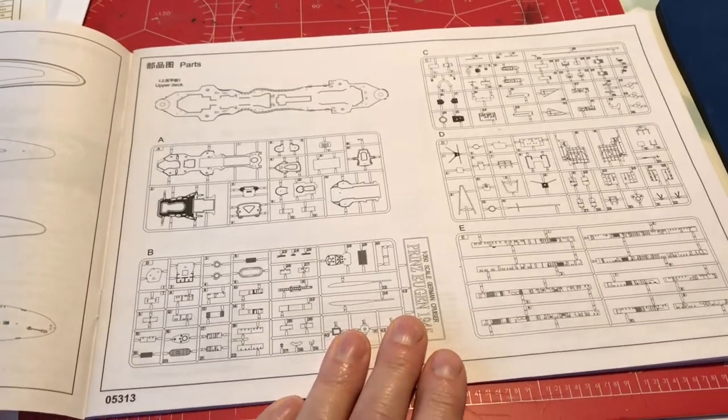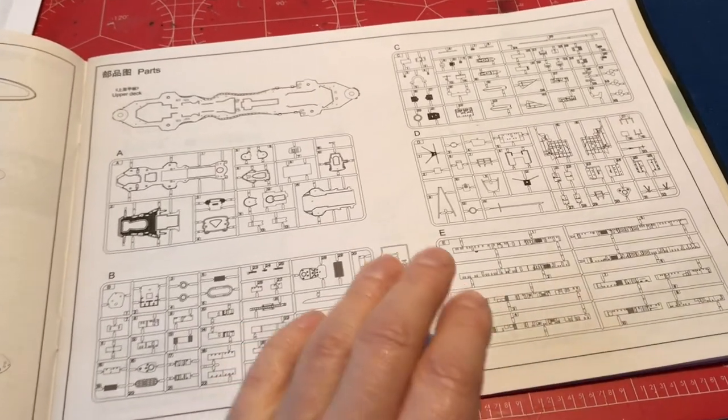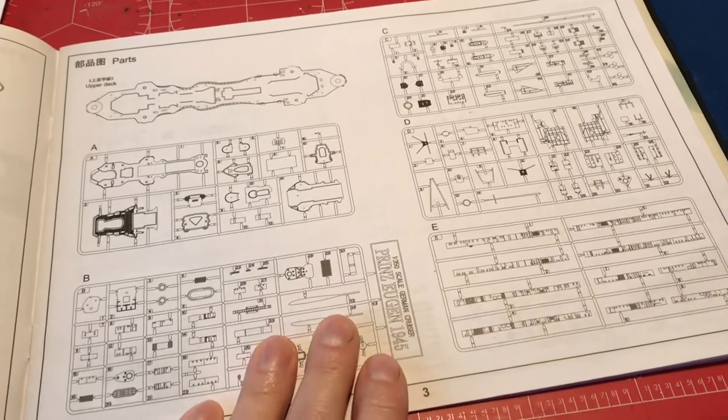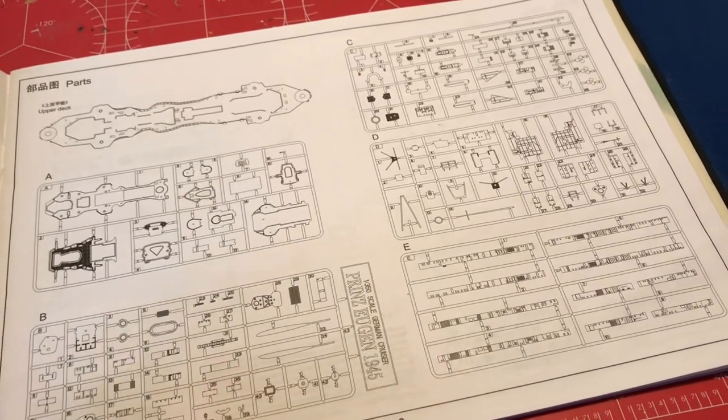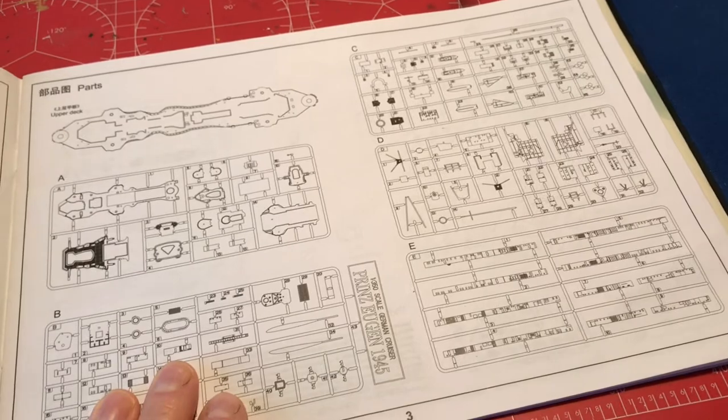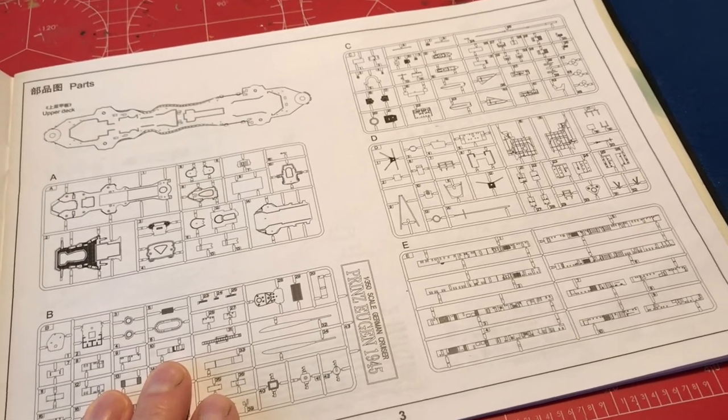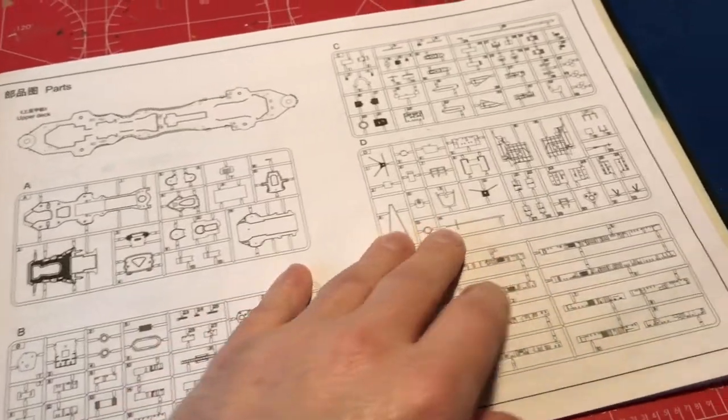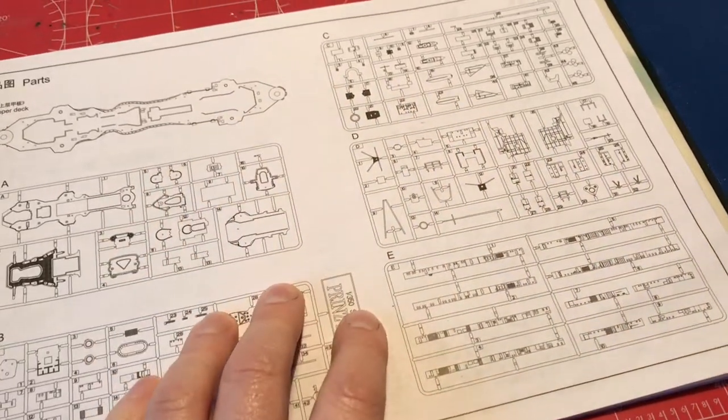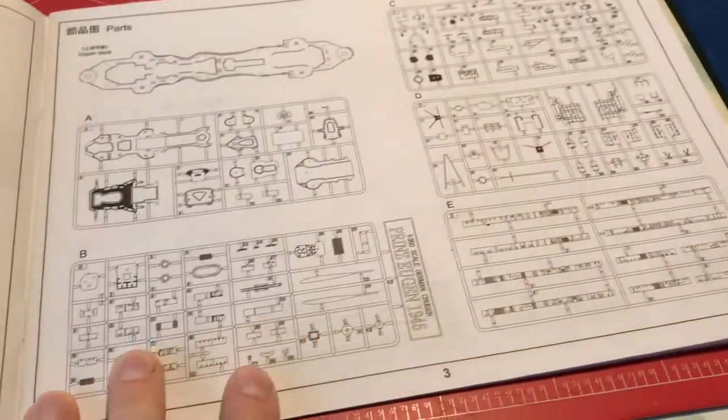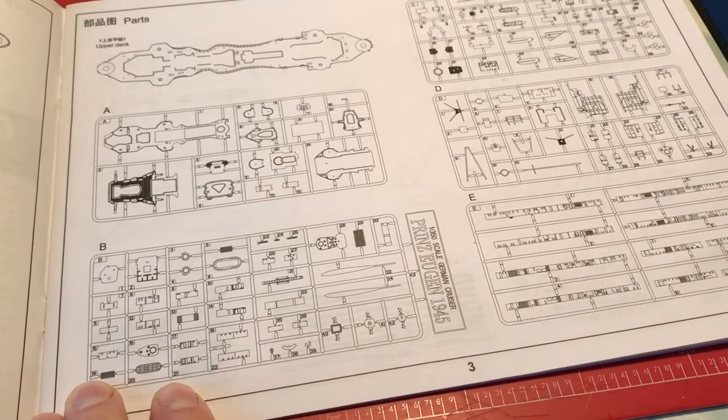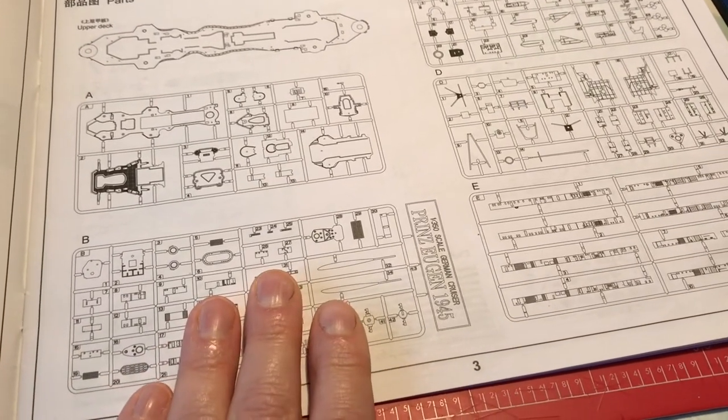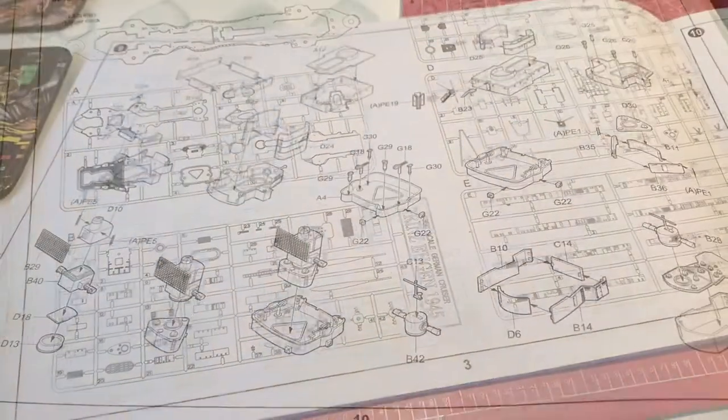There's nothing more frustrating than getting halfway through a build, finding you've got a part missing or a part damaged, and having to pause the build while you wait for that part to turn up because it can take quite a long time to get through that process sometimes. So that's the first thing we're going to do—check that we've got all the sprues. Some of these sprues may well be multiples. Make sure nothing's damaged, and then if there is we can deal with that straight away.